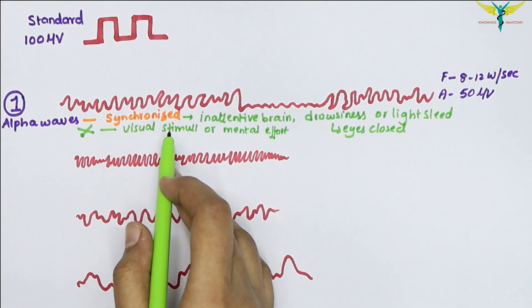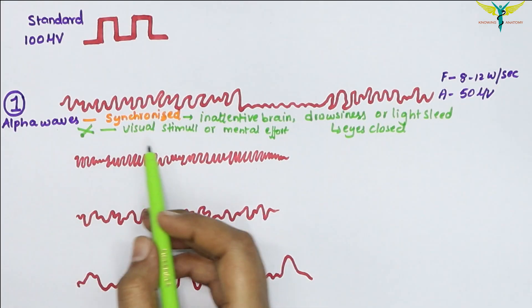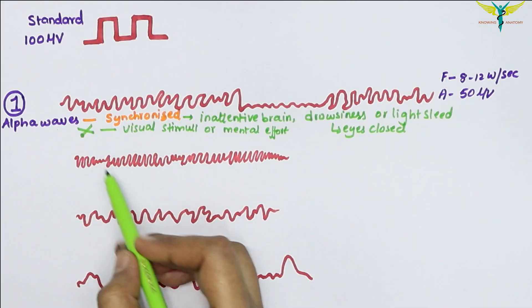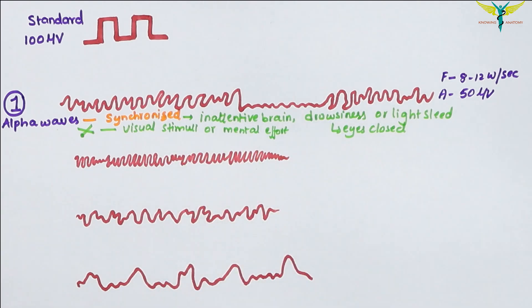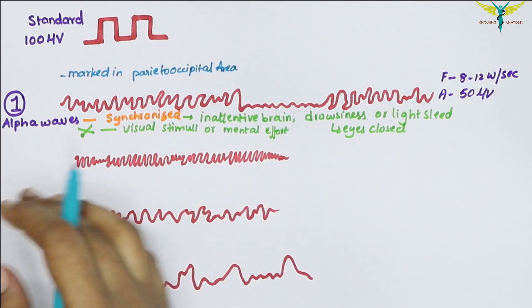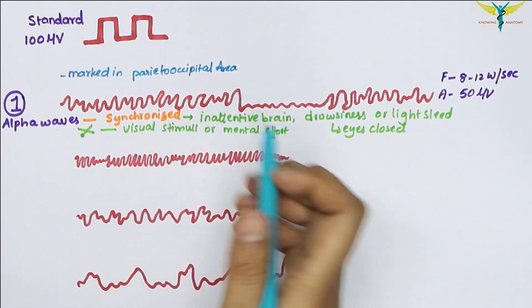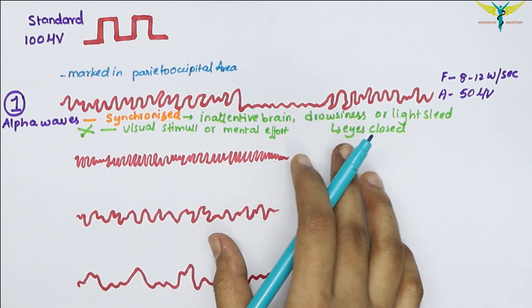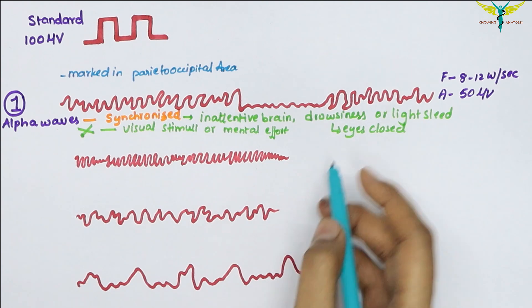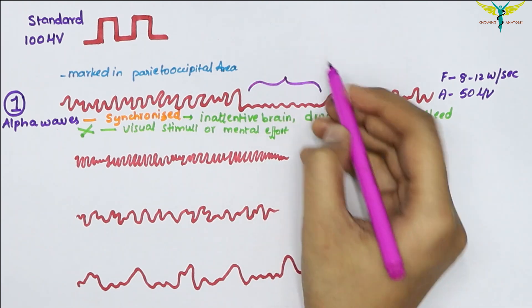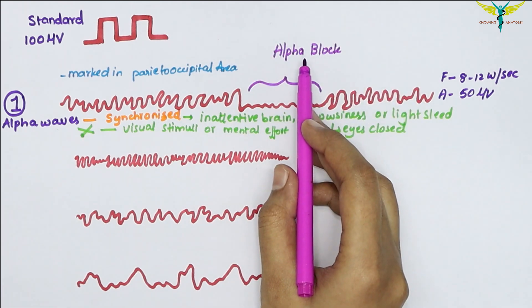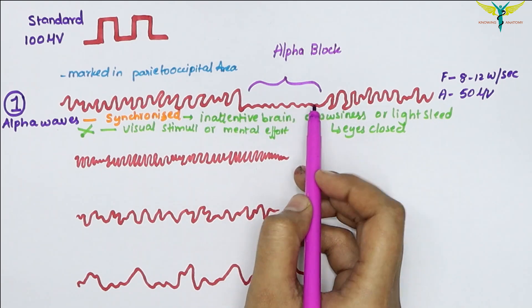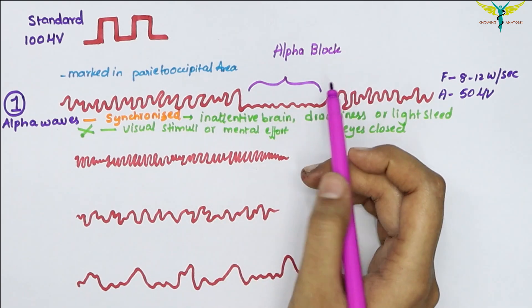The waves of the alpha rhythm are mostly marked in the parieto-occipital area, and sometimes these waves appear in other areas also. Now let's talk about the alpha block. This is the alpha block.